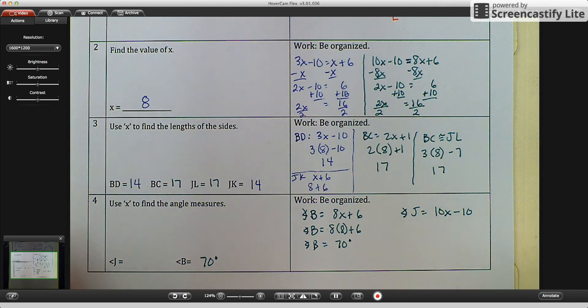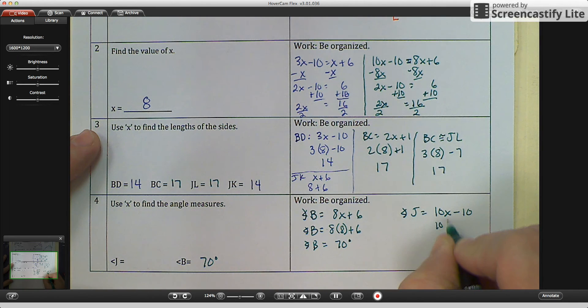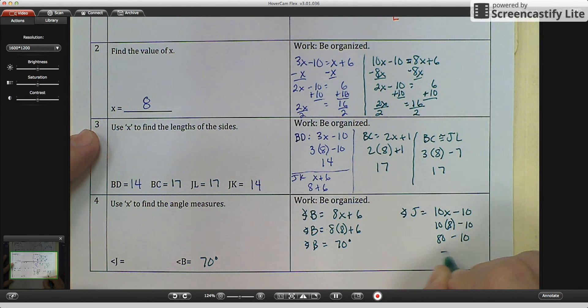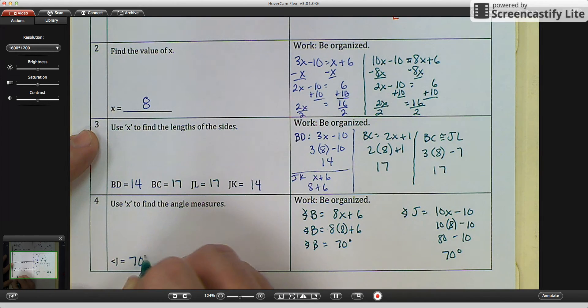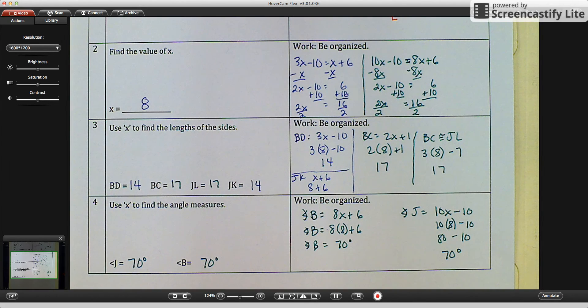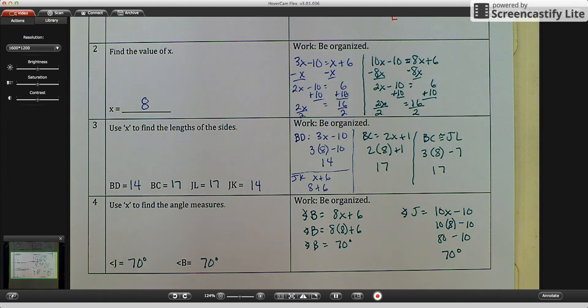And then, 10 times 8 minus 10. And that would be 80 minus 10 equals 70 degrees. So, again, 70 degrees. Sorry for the pause there. I was trying to figure that out. And that's how you do it.